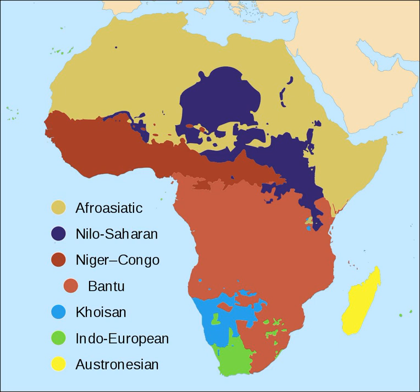The inclusion of the Songhai languages is questionable, and doubts have been raised over the Koman, Gumuz and Kadu branches. Some of the better known Nilo-Saharan languages are Kanuri, Fur, Songhai, Nubian and the widespread Nilotic family, which includes the Luo, Dinka and Maasai. The Nilo-Saharan languages are tonal.